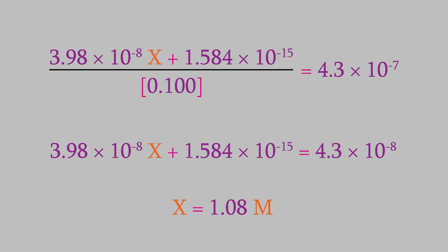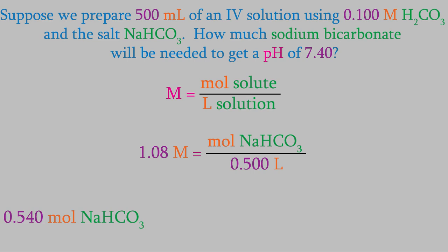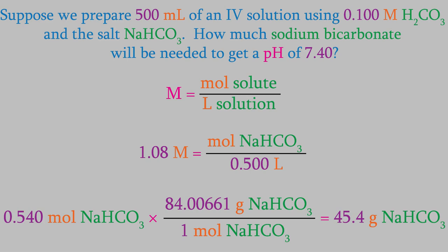If you remember, X is the concentration of sodium bicarbonate that we need in the IV solution we're making. So, we have 1.08 molar sodium bicarbonate. Now we just need to convert that to the mass. We'll use the definition of molarity to find the moles of sodium bicarbonate. The question tells us we have 500 milliliters of solution, so that's 0.500 liters, which means we have 0.540 moles of sodium bicarbonate. Finally, we'll use the periodic table to find the mass. It turns out that we need 45.4 grams of sodium bicarbonate. When we dissolve that in the 500 mils of carbonic acid, we should get a buffer with a pH of 7.40, so that would be safe to use in an intravenous solution.